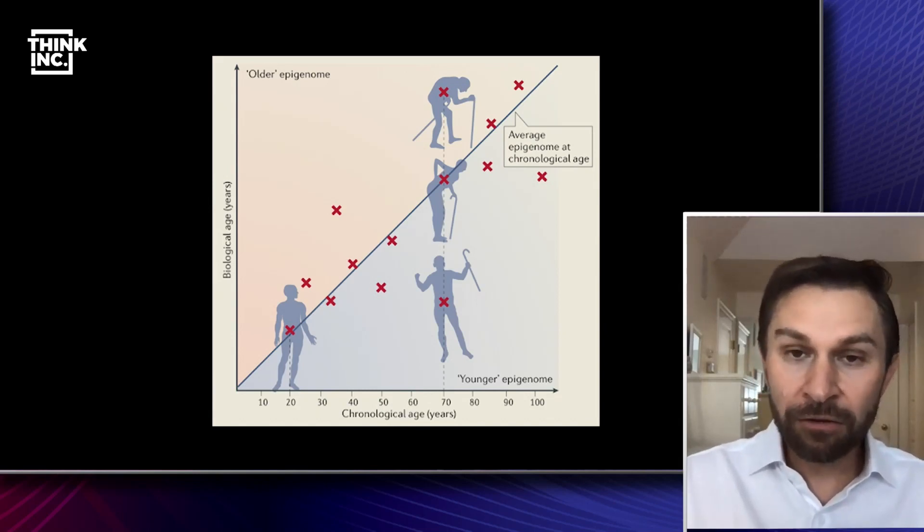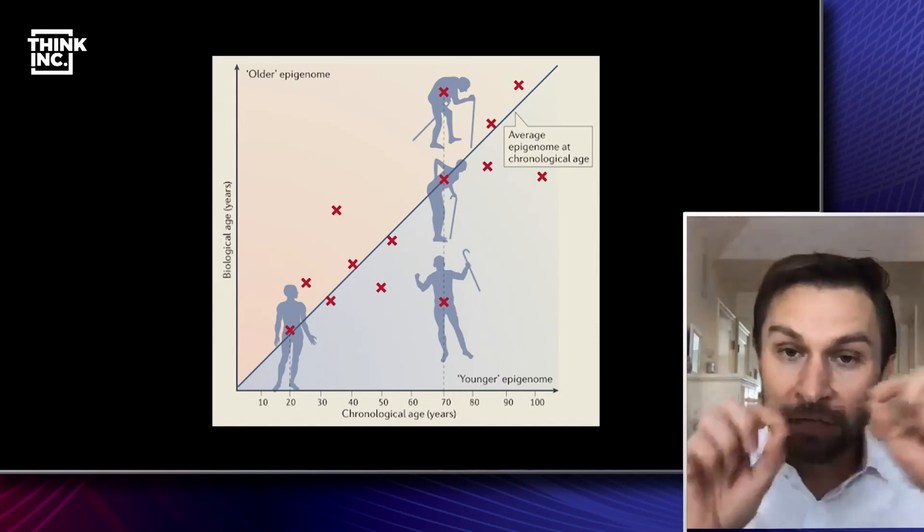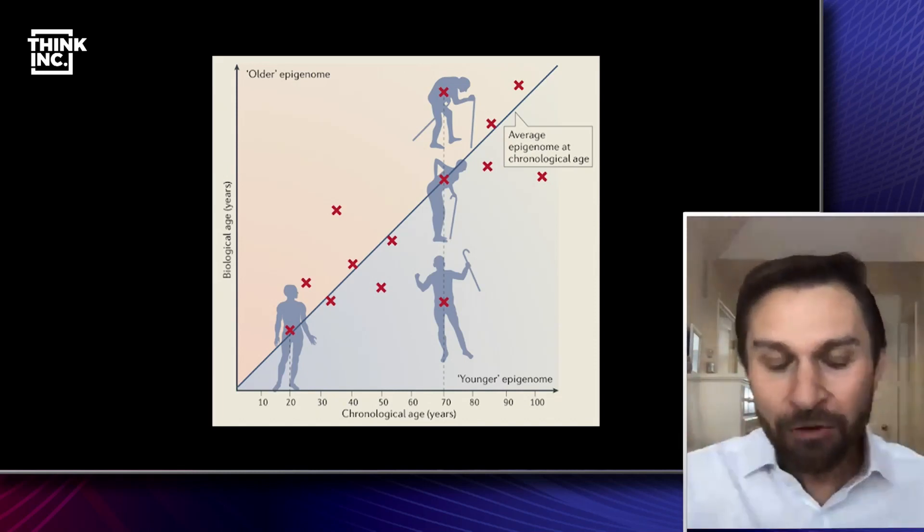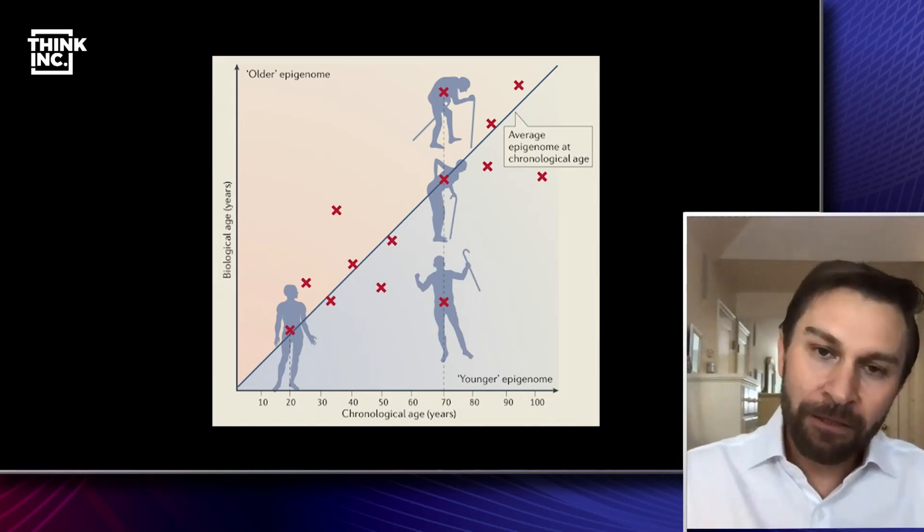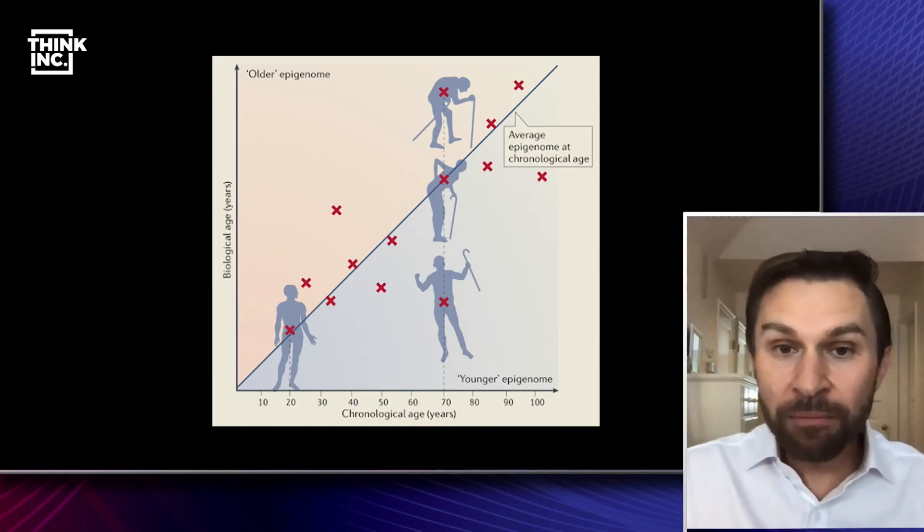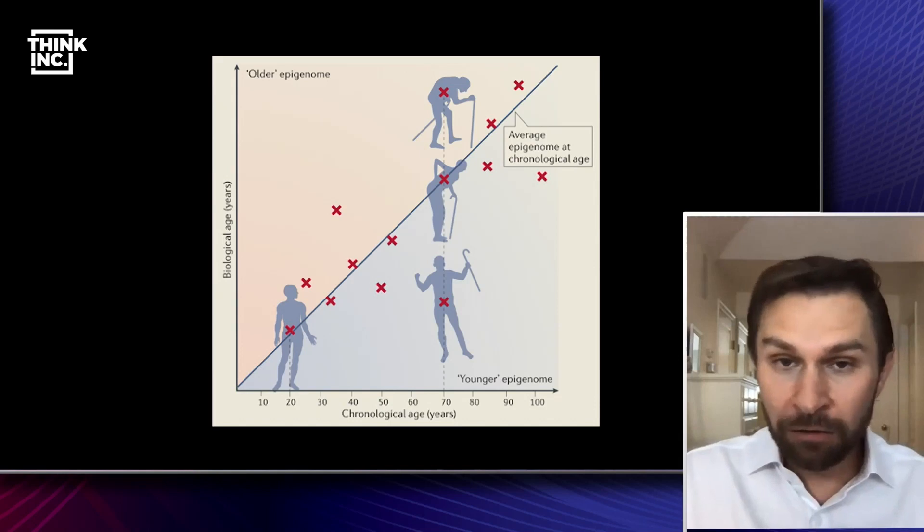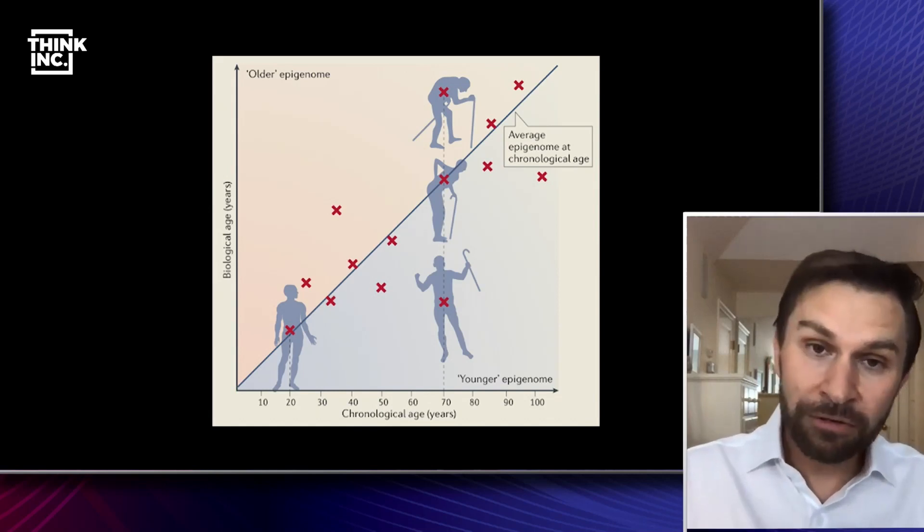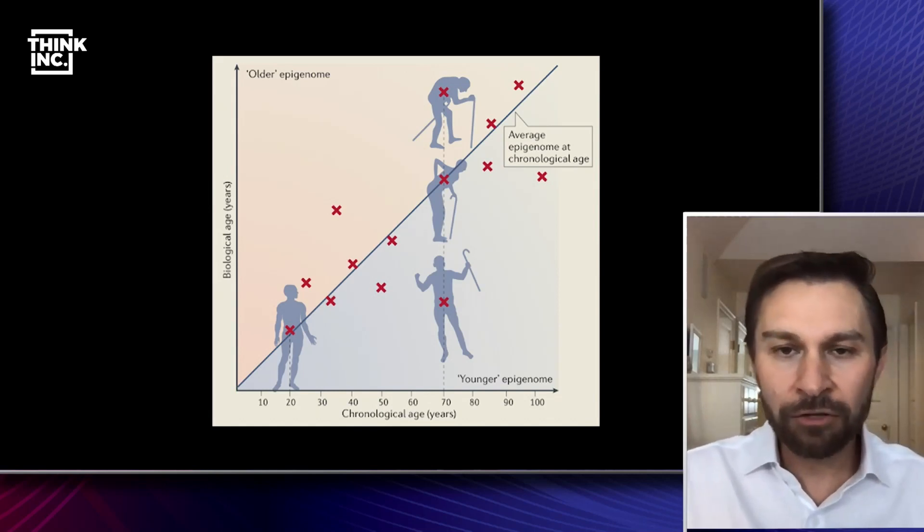I could take your cells, measure those little tags that are accumulating, and see how unraveled your DNA is over time. And it turns out people who live healthy, eat well, exercise, are younger than their biological or their chronological age, their normal age. And those that smoke, become obese, don't exercise, tend to have an older biological age.